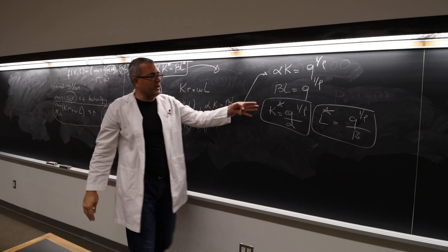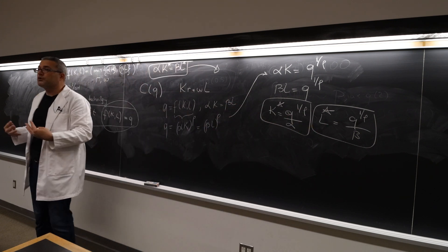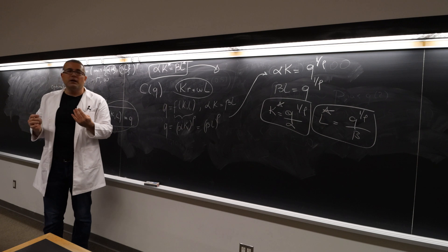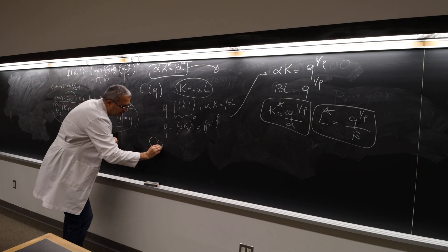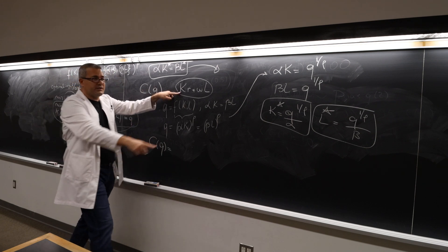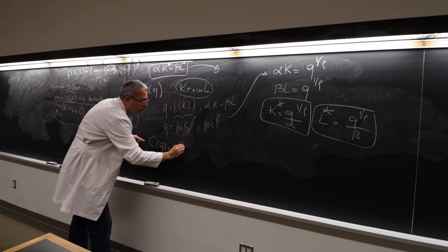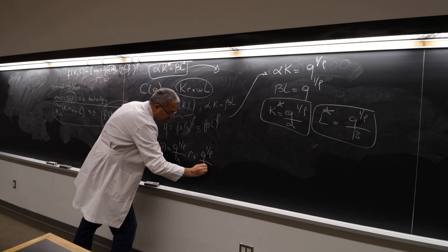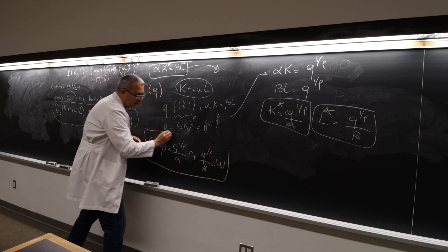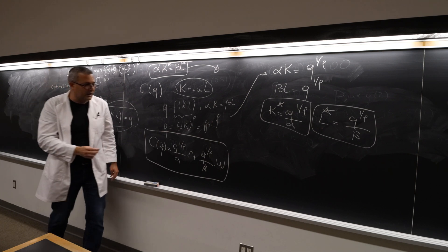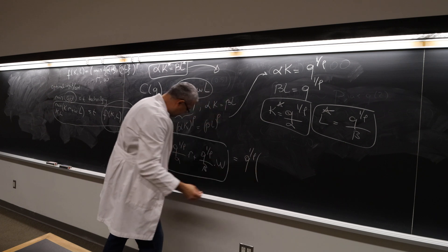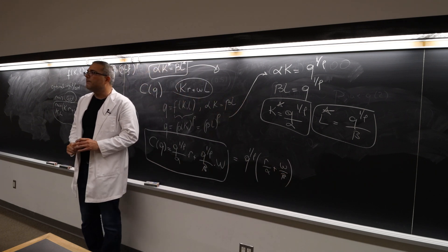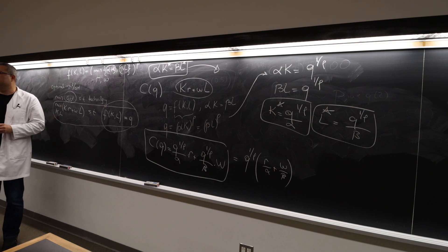So what is my cost function? My cost is the cost of inputs: C of Q equals K star times R plus L star times W, which is Q to the power 1 over rho divided by alpha times R, plus Q to the power 1 over rho divided by beta times W. You can simplify by factoring out Q to the power 1 over rho, giving Q to the power 1 over rho times the quantity R over alpha plus W over beta. That's the cost function.